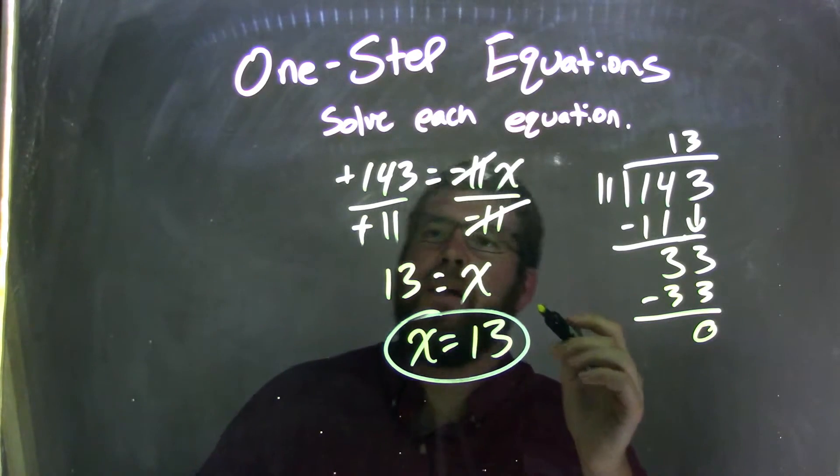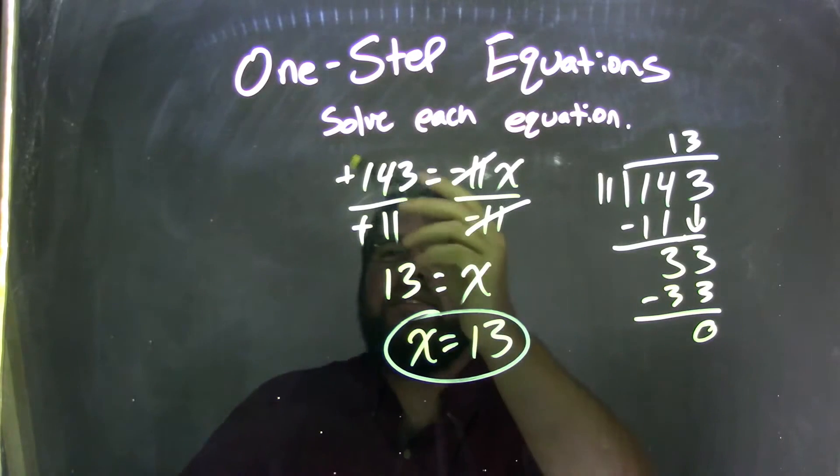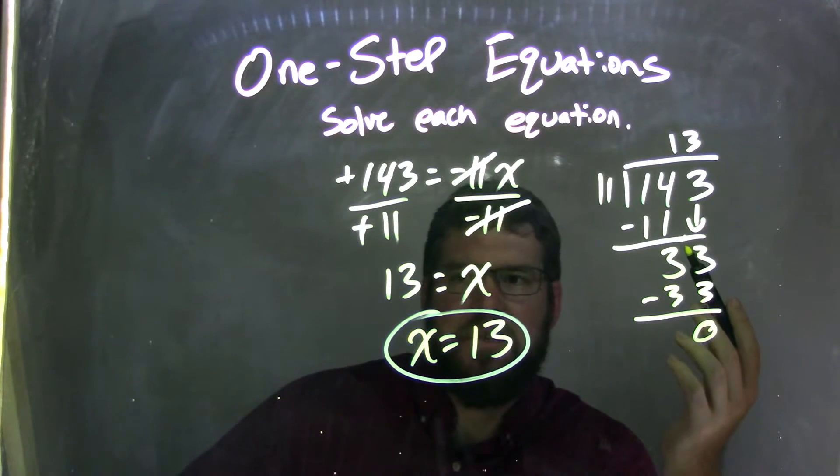Negative 11s cancel on the right. Now I'm left with negative 143 divided by negative 11. The two negatives here also cancel. A negative divided by a negative is a positive. So now I use long division here.